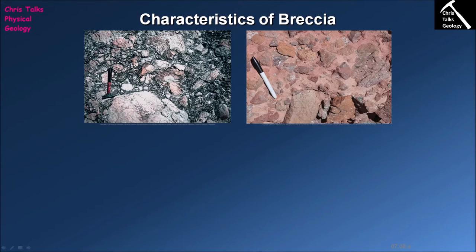Breccias and conglomerates are clastic sedimentary rocks which are dominated by clasts that are larger than two millimetres in diameter. This means these rocks are going to be dominated by gravel-sized clasts, cobble-sized clasts, and boulder-sized clasts. The clasts themselves are easily visible in both breccias and conglomerates.